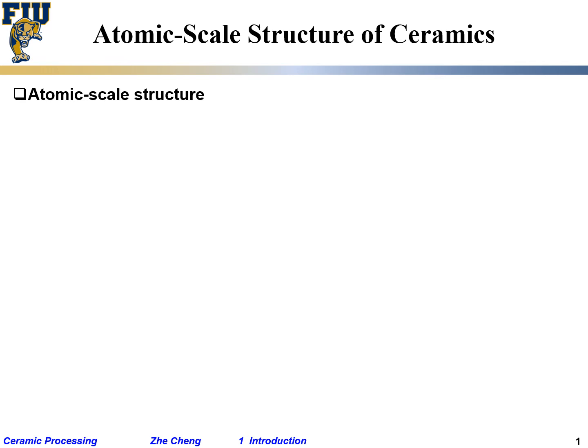Now we quickly glance through the typical different structural ceramics and functional ceramics with examples. Now let's look at the structure specifically — the atomic scale structure of ceramics.